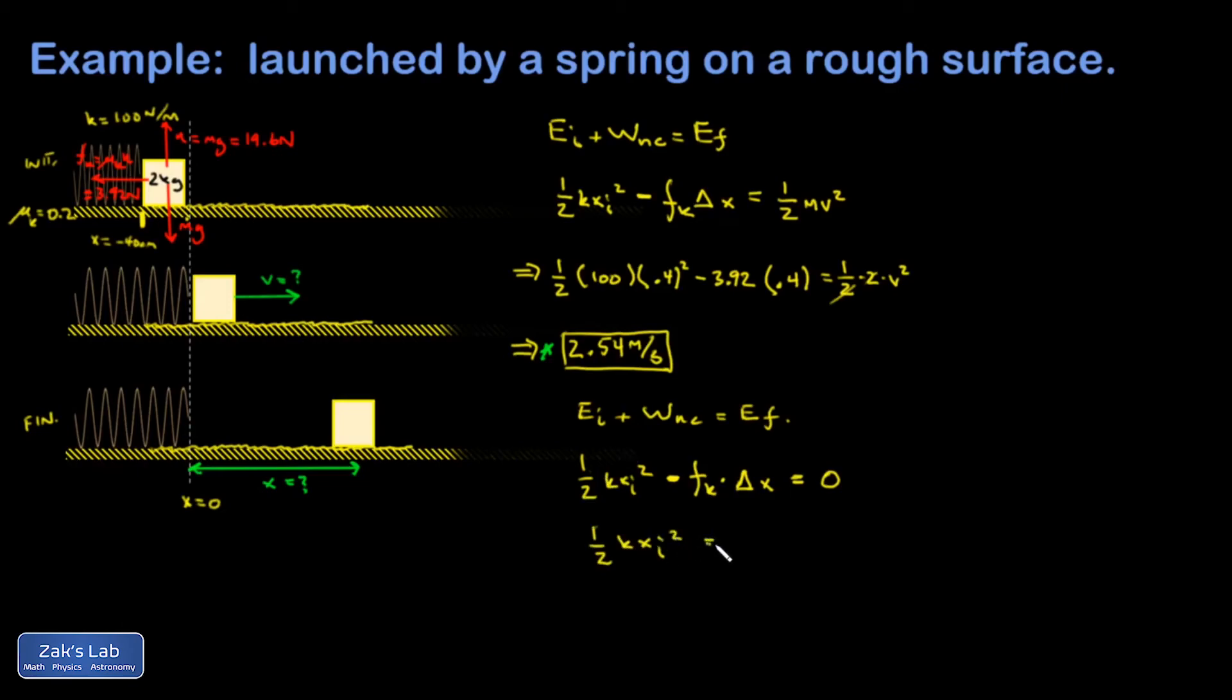So I can work on solving for delta X here. May as well do it symbolically since I'm so close. So I have KX initial squared over 2 FK. So I get 100 times 0.4 meter compression squared over 2 times 3.92 newtons. Let's smash these numbers. 100 times 0.4 squared divided by twice 3.92. And I get 2.04 for this.